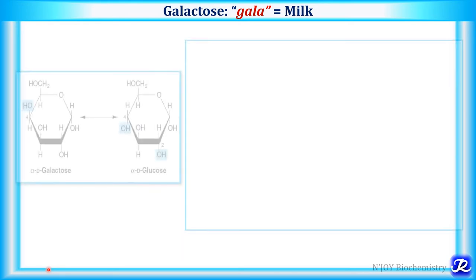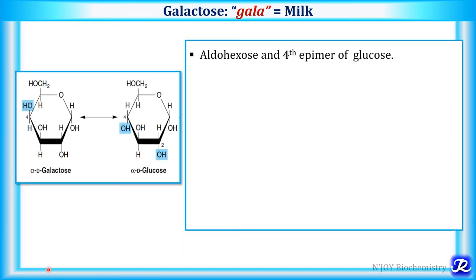Galactose is a monosaccharide and this word galactose is derived from the Greek word 'gala' which means milk. Galactose is an aldohexose and it is the fourth epimer of glucose, because if you see the structure of glucose and galactose, there is only a difference of the hydroxyl group at the fourth carbon. That's why galactose is called the fourth epimer of glucose.